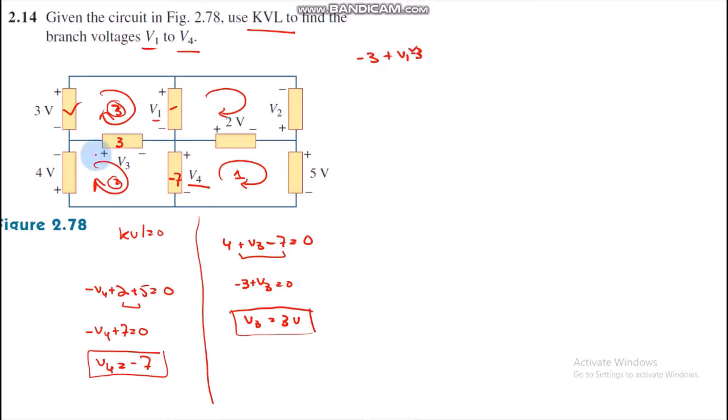The minus is because the supply is from negative to positive, and equals zero. When we find it, then minus minus 6 plus V1 equals zero. Then V1 equals 6 volts.